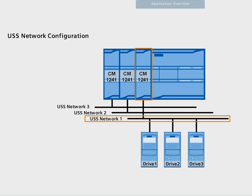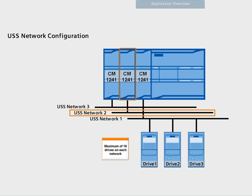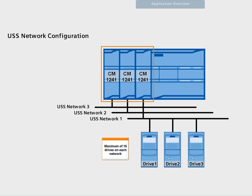A USS network with up to 16 drives can be configured per communication module. Drives connected to other communication modules belong to another USS network. Since an S7-1200 controller supports up to three communication modules, a total of up to 48 drives can be used.